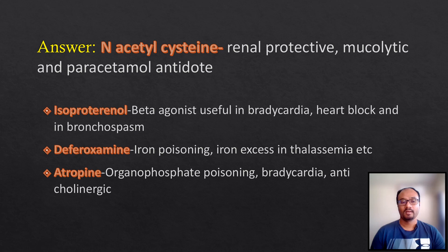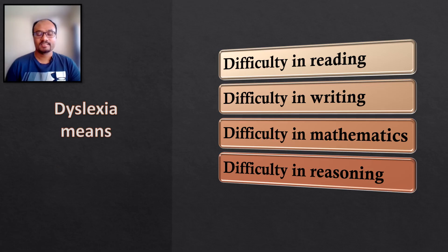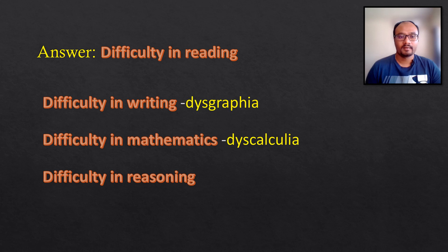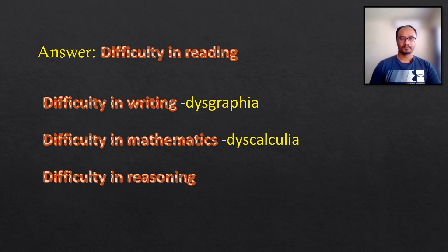The next question is: dyslexia means — and the options are difficulty in reading, difficulty in writing, difficulty in mathematics, and difficulty in reasoning. The correct answer is difficulty in reading. Difficulty in writing is called dysgraphia, and difficulty in mathematics is called dyscalculia.